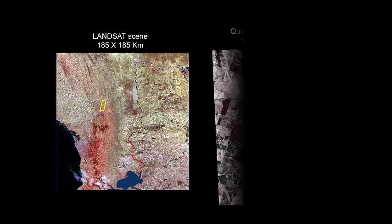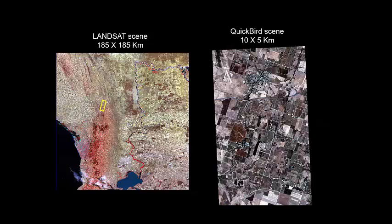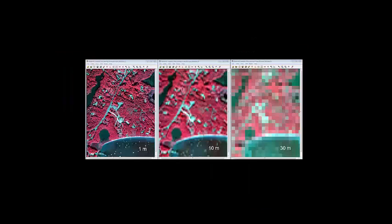If we drill down further, this is comparing a Landsat image scene with a QuickBird image scene. QuickBird is another satellite that collects much smaller extents at a much finer resolution. You can see this QuickBird scene is only 10 by 5 kilometres, but there's a huge amount of detail and quite fine detail. You can pick up individual paddocks, individual houses, and you can see the roads dividing paddocks and properties.